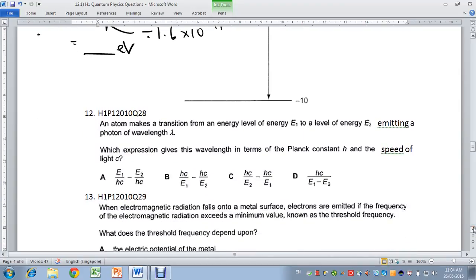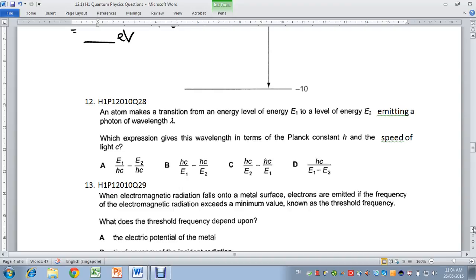Question 12. An atom makes a transition from an energy level E1 to energy level E2. The clue here is it emits a photon of wavelength lambda, which means that energy level E1 is actually higher than energy level E2, right? So this is a little bit against the usual conventions.